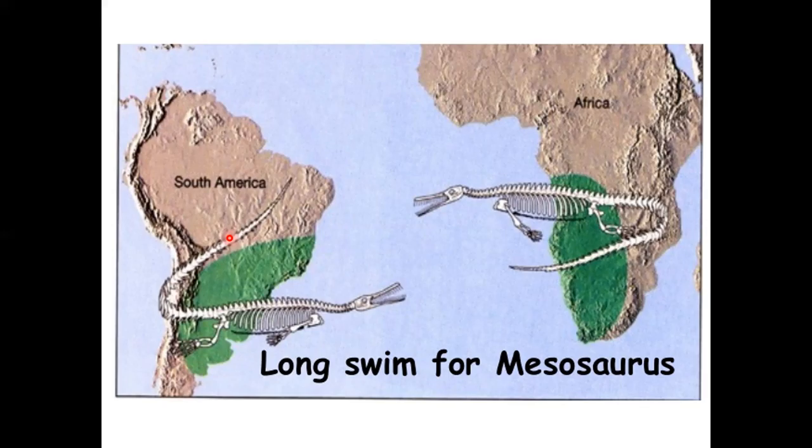Mesosaurus, a small dinosaur-like creature, has had its fossils found in only two places on Earth: portions of Brazil and Argentina in South America, and Eastern Africa. It was a freshwater animal, so it couldn't have survived swimming across the ocean. Wegener argued it lived in one large landmass when South America and Africa were together, and when they split apart, that's why we find fossils in two separate places.